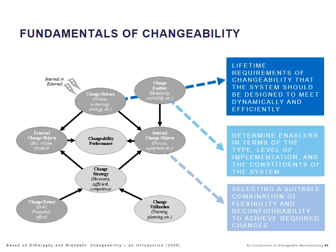Now we have determined the lifetime requirements of change through the change drivers, and we have determined the right enablers to respond to those requirements. The third step is to select a suitable combination of flexibility and reconfigurability to achieve the required change — basically, should changeability be achieved through a high range of predetermined flexibility, or would we rather invest in modularity to make easy reconfiguration of the system over time.